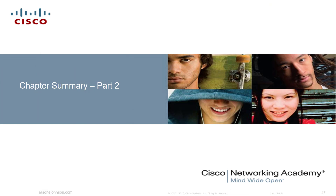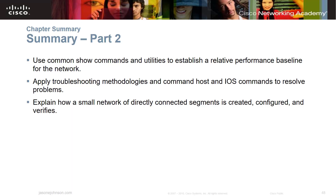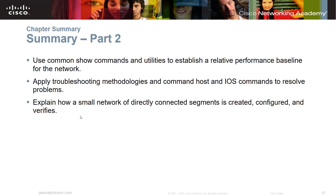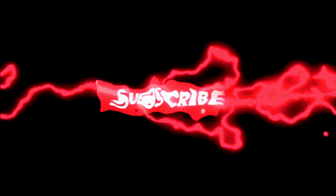This has been Chapter 11, Part 2 of 2. We looked at using common show commands and utilities to establish a relative performance baseline, applying troubleshooting methodologies using host and IOS commands, and how a small network of directly connected segments is created, configured, and verified using ipconfig and ping. This is a two-part chapter, so check out Part 1 — the link is in the description below or at the end of this video. I hope this video series was helpful. Chapter 11 concludes this series, so check my YouTube channel for other playlists. Have a great day.